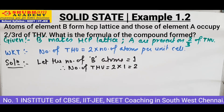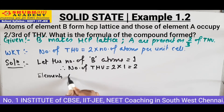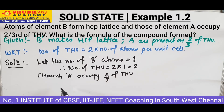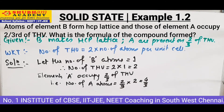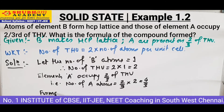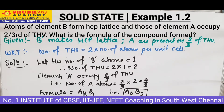In the question it says that element A is present on two-thirds of the tetrahedral voids. So the number of A atoms is equal to 2/3 of tetrahedral voids, which is 2/3 of 2, giving 4/3. So B is 1 and A is 4/3. Our formula is A₄/₃B₁, and the simplest whole-number formula will be A₄B₃.